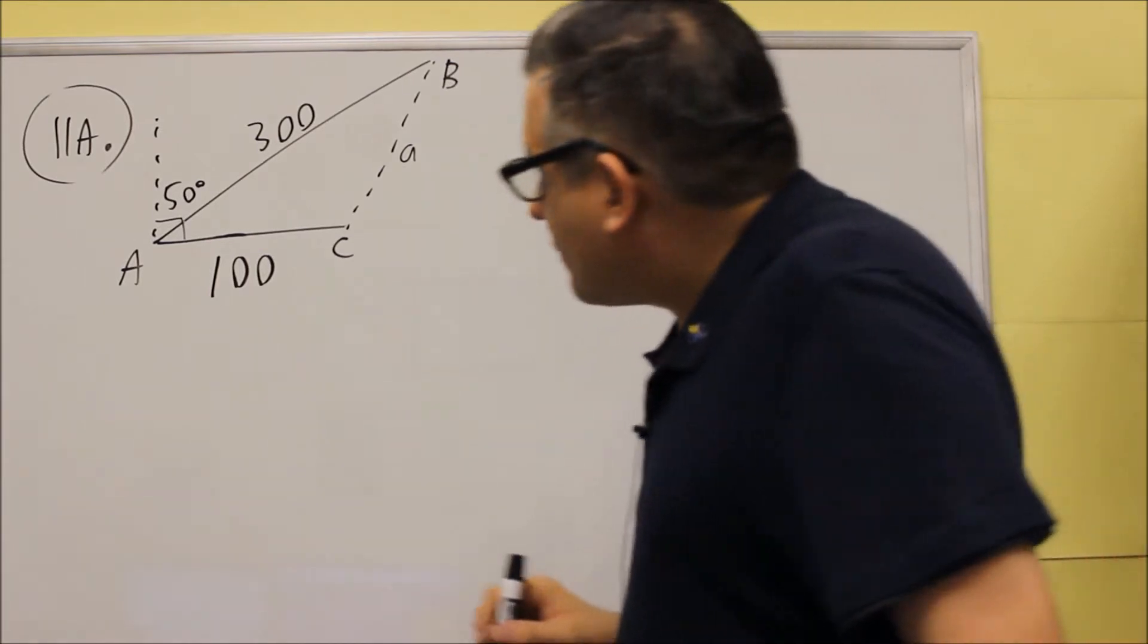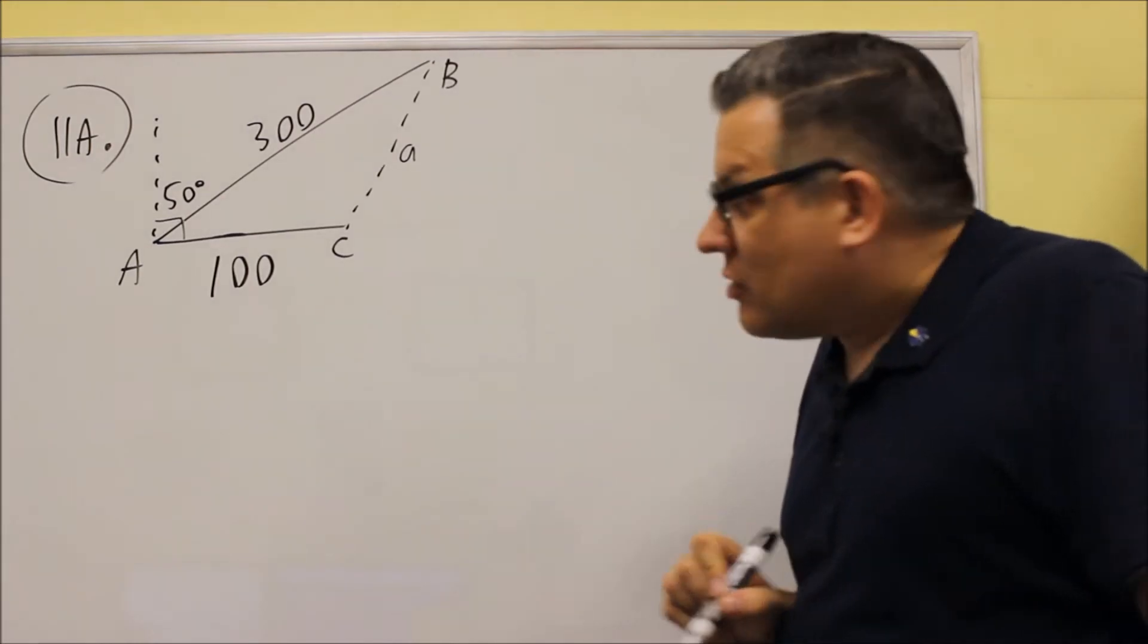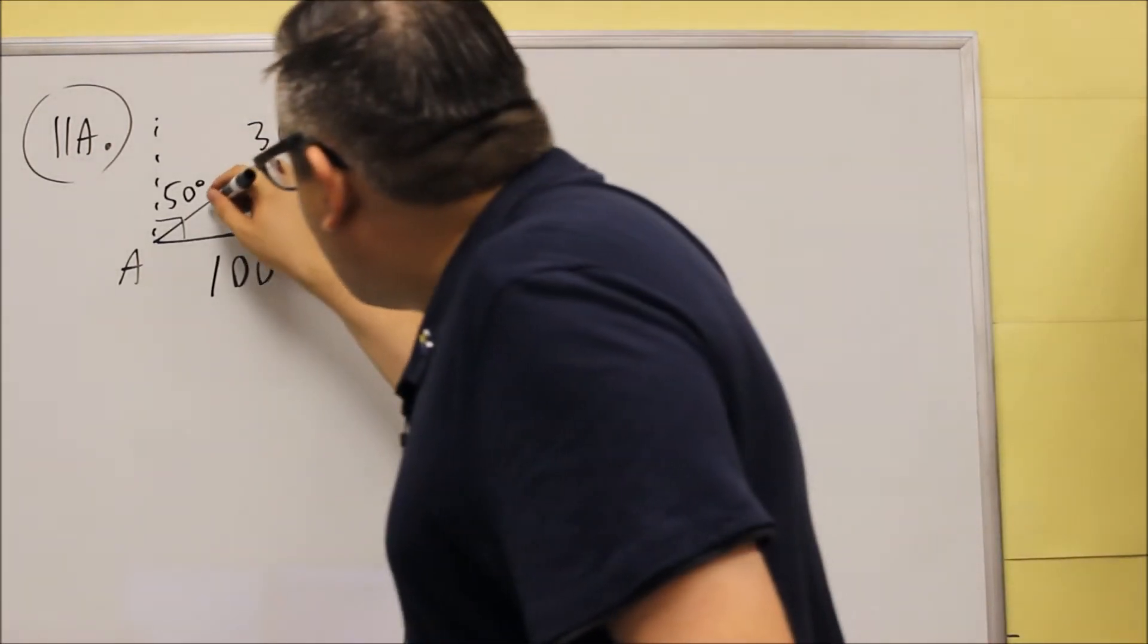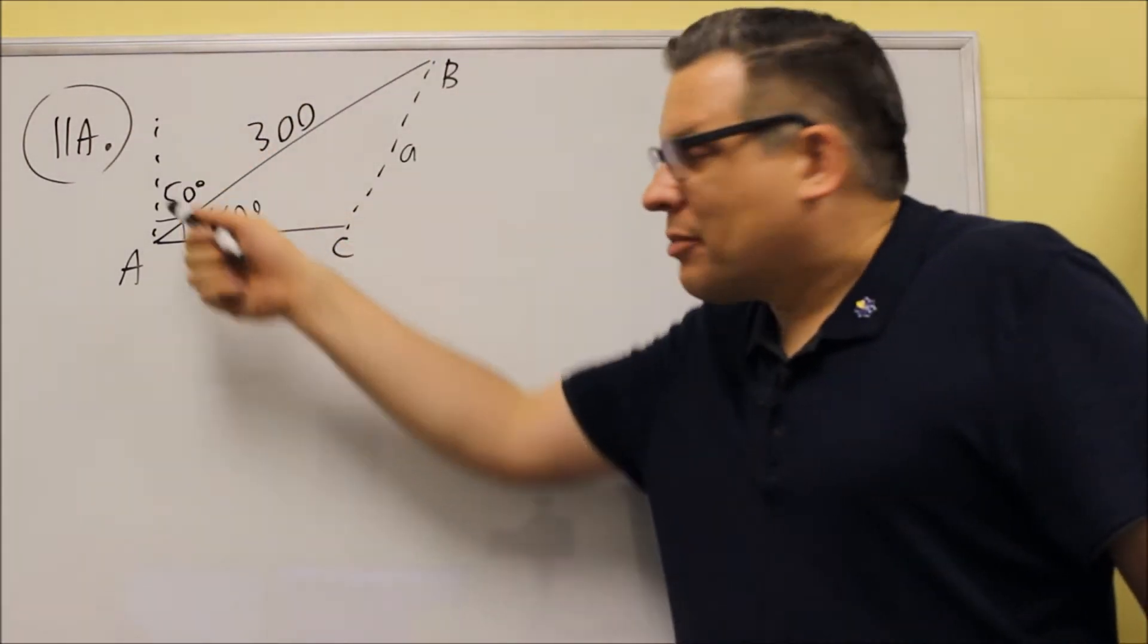And so, in order to find the angle inside, we have to subtract that from 90 degrees. So we're going to do 90 minus 50, and that's going to give us 40 degrees inside. So you have to know a little something about bearings.